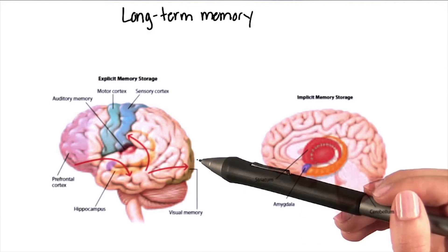In long-term memory, storage in sensory memory and short-term memory has a strictly limited capacity and duration, meaning information is available for a certain period but is not retained indefinitely. In contrast, long-term memory can store much larger quantities of information for potentially unlimited duration, sometimes a whole lifespan. For example, a poem learned in childhood will remain for a longer period of time.